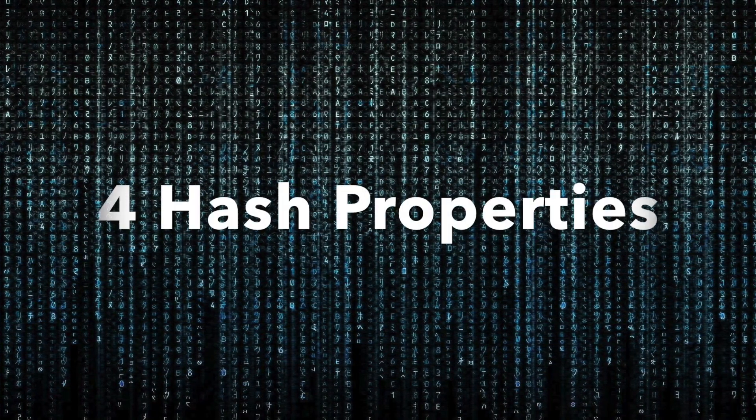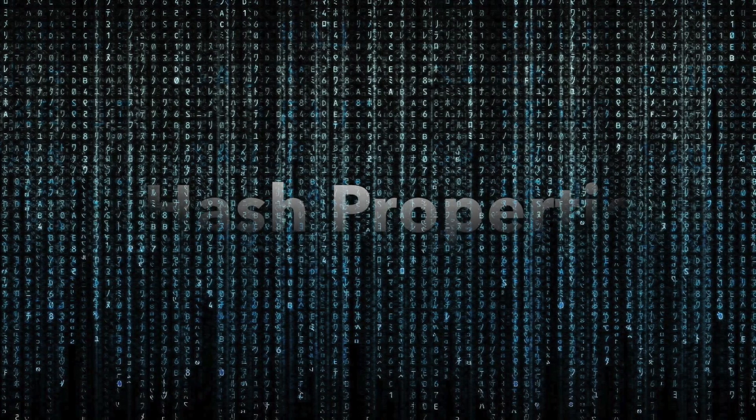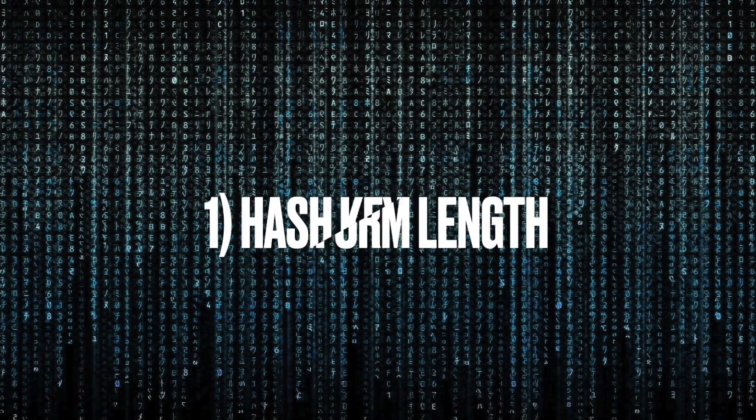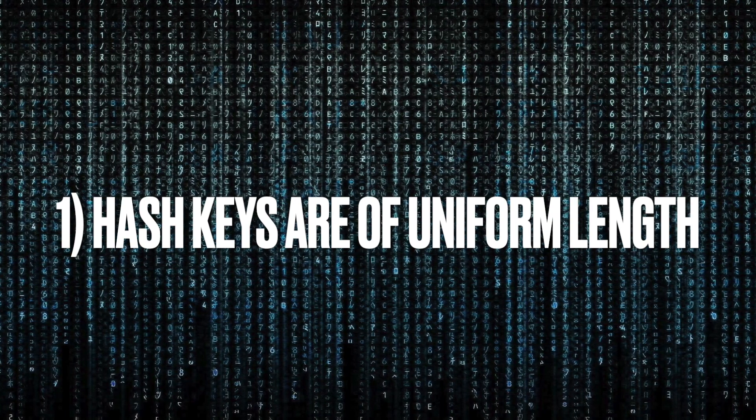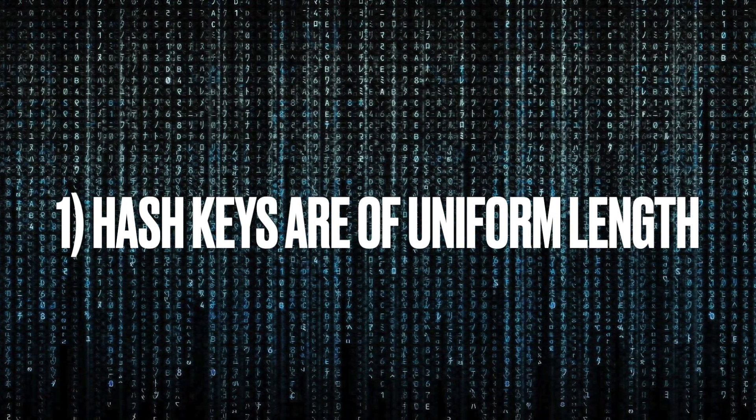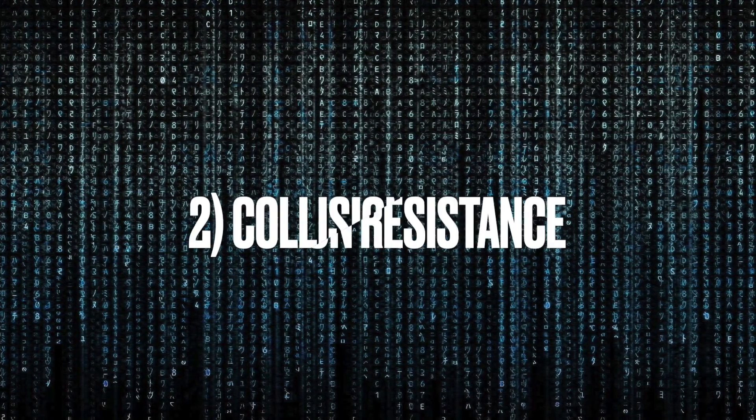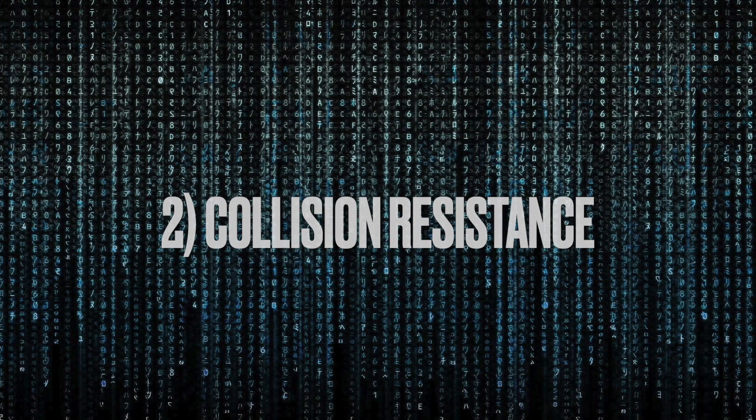Now, there are four properties all hashes must have to work effectively. The first of these is that all hash keys must be of uniform size. Varying sizes in hash keys would cause numerous edge cases, complicating the hashing process greatly. Secondly, there is collision resistance, which you already know.